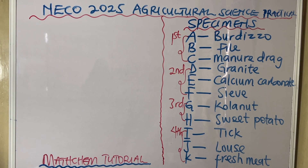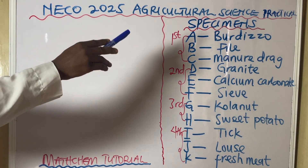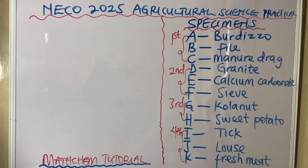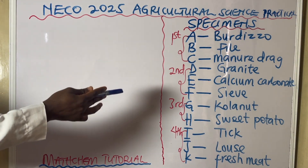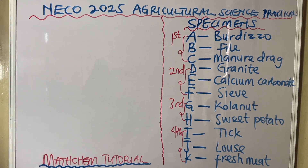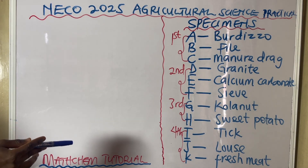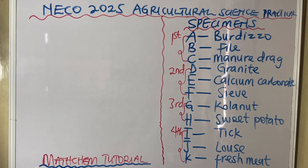In this video we're looking into NECO 2025 agricultural science practical preparatory. These are the specimens released by NECO official. The specimens go from A to J, as you can see on your screen. I categorize these specimens into four categories.